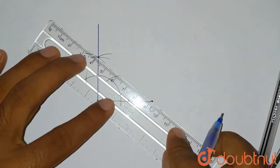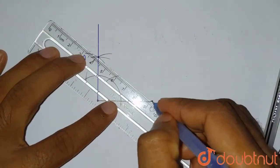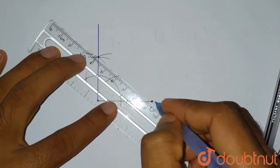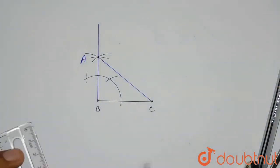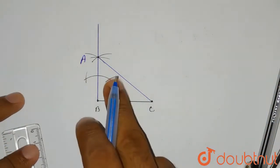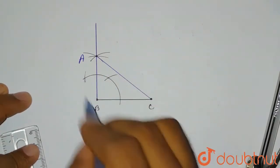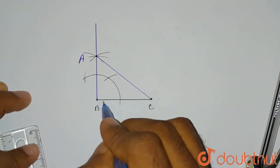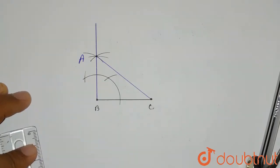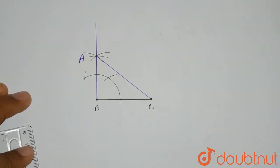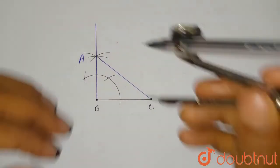Now we'll join A and C. You can see that the angle at B is 90 degrees, which means AC is the hypotenuse. Now we have to find the midpoint of AC, so for that we'll draw the perpendicular bisector of AC.